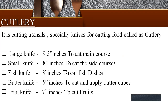What is cutlery? Cutlery refers to cutting utensils, especially knives for cutting food. We have different cutlery used in five-star hotels: large knife, 9.5 inches, used to eat the main course; small knife, 8 inches, for side courses; fish knife, 8 inches, used with fish dishes; butter knife, 5 inches, used to cut and apply butter cubes on bread; and fruit knife, 7 inches, used to cut fruits.